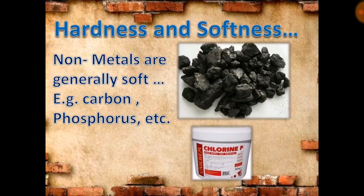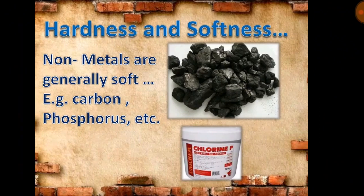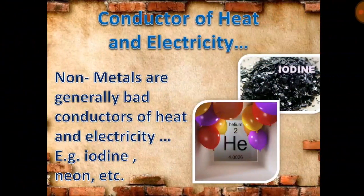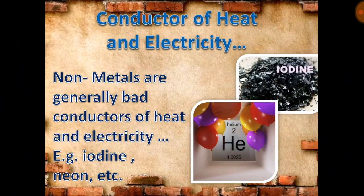Hardness and softness. Non-metals are generally soft — for example, carbon, phosphorus, etc. This is also due to the atomic structure. Conductivity. Non-metals are generally bad conductors of heat and electricity. For example, iodine, neon, etc.